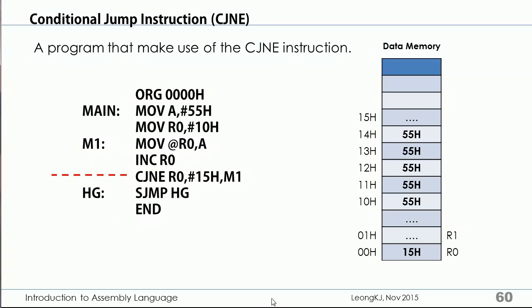The CJNE instruction has created a loop in the program. The number of times the loop runs is determined by the program.